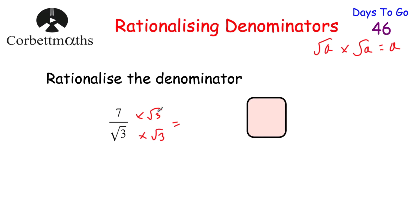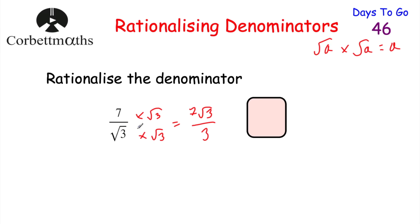So we'd have 7 multiplied by root 3 on the numerator, which gives 7√3, and on the denominator we'd have root 3 times root 3, which is root 9, which is just 3. We've rationalized the denominator — it's now the rational number 3. So if you've got a fraction like 7 over root 3, simply multiply both the numerator and denominator by the surd on the denominator.